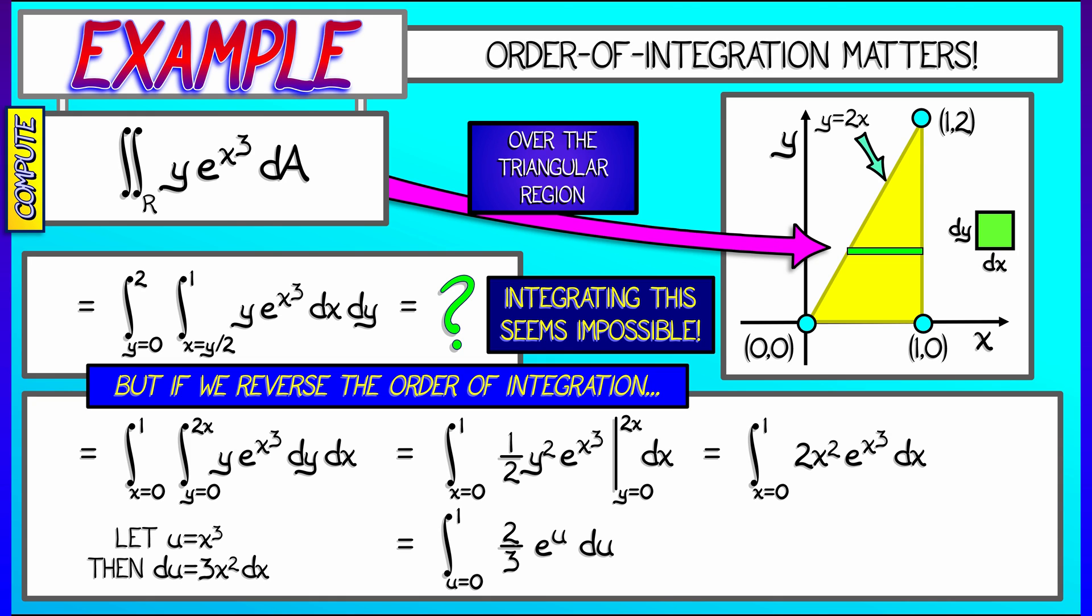That integrates to 2 thirds e to the u. As u goes from 0 to 1, that gives us our final answer of 2 thirds times quantity e minus 1. That was simple. And that is why order matters when you're doing multiple integrals.